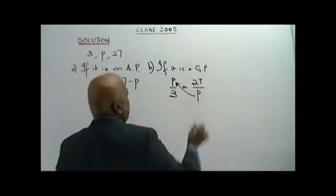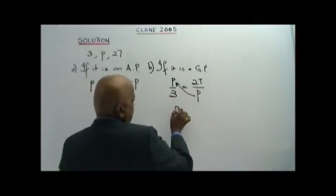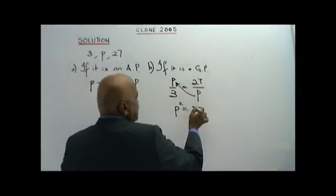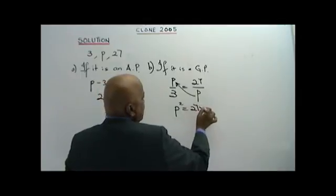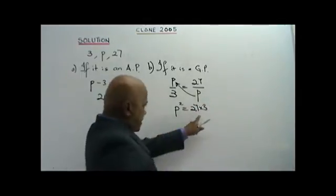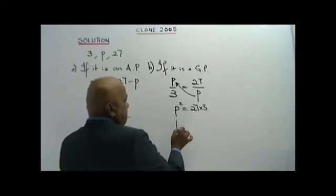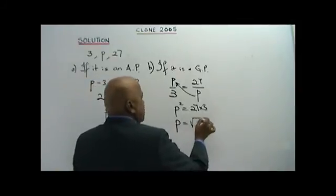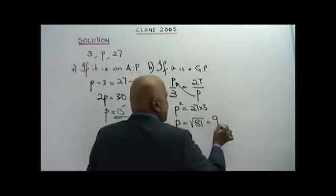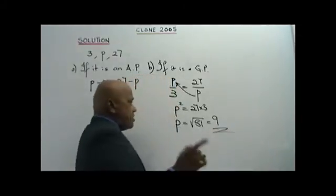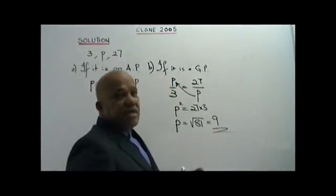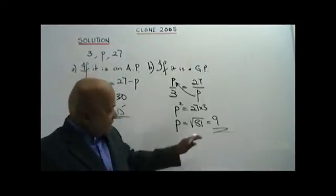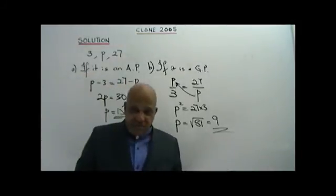P times P equals P squared, which equals 27 times 3 = 81. So P equals the square root of 81, which is 9 — because they want the positive value of P. That is your answer.